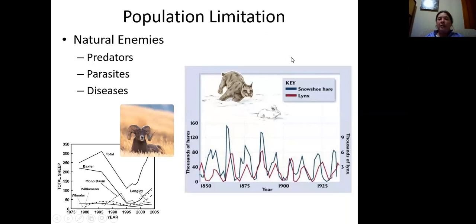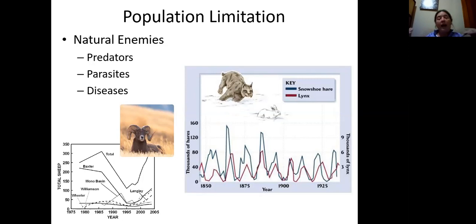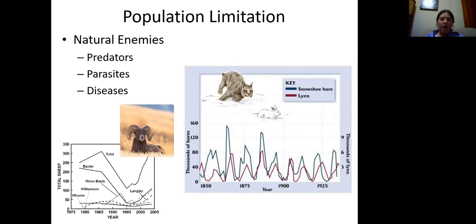Another example of limitation by a natural enemy is bighorn sheep. Bighorn sheep are very susceptible to a lungworm parasite. What they found is that their populations were limited by this parasite when they were at high density — it was easy for the parasite to be transmitted from one individual to another, causing a population crash down to lower density. But at lower density, the parasite wasn't able to transmit as readily. This is an example of a density-dependent factor: having too high a density of sheep led to increased impact of the disease until the population got low enough to reduce transmission.